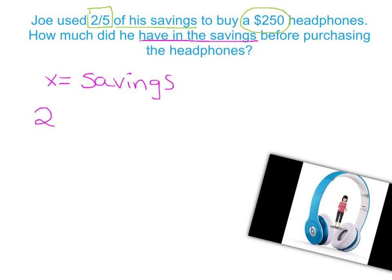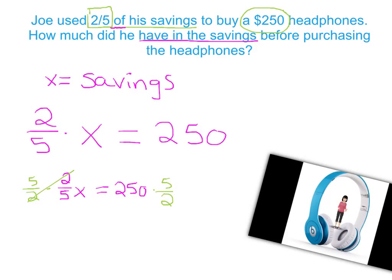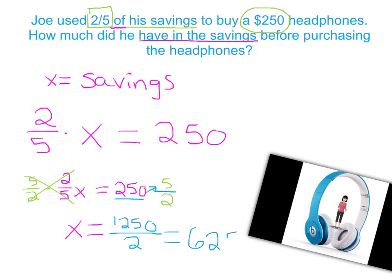Now we have to write an equation. We have two-fifths of — 'of' means multiply — two-fifths of his savings, and our savings is our variable. So two-fifths times x equals $250. Now we have to solve it; when we have a fraction in front we're multiplying, we have to multiply by the reciprocal. The fraction cancels out, and we're left with x equals — you can do 250 times 5, then divide by 2. So 250 times 5 is $1,250, and dividing by 2 gives $625.